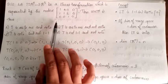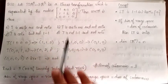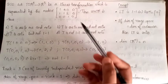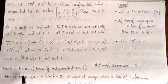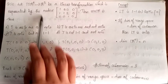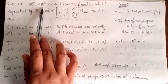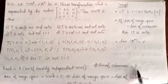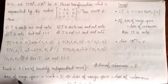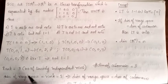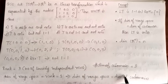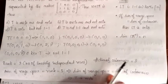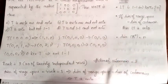Now I am going to find the rank of this matrix. The number of linearly independent rows gives the rank, which is equal to 3. The dimension of the codomain R3 is also 3. So the dimension of the range space equals 3, which implies the dimension of the range space equals the dimension of the codomain.